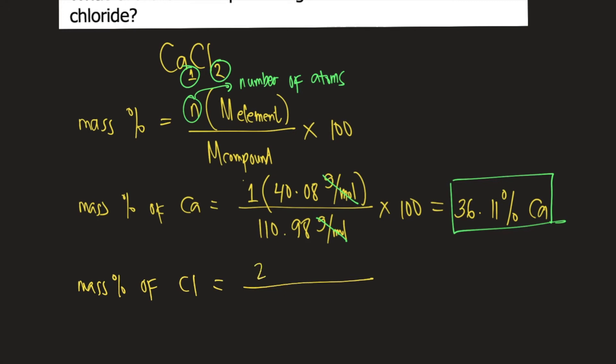So you put 2 times the molar mass of Cl, which is 35.45 grams per mole if you check the periodic table, divided by the molar mass of the compound, which is 110.98 grams per mole times 100.